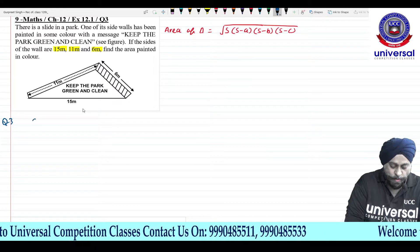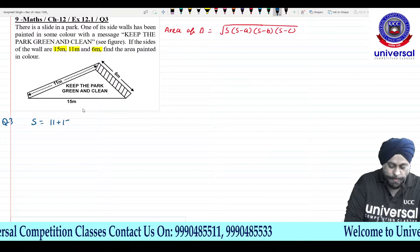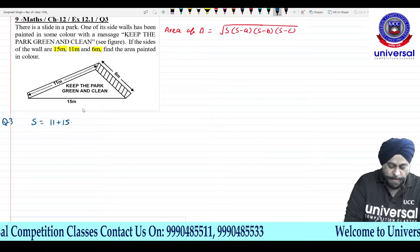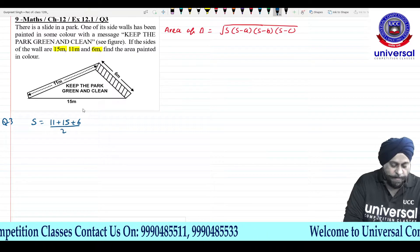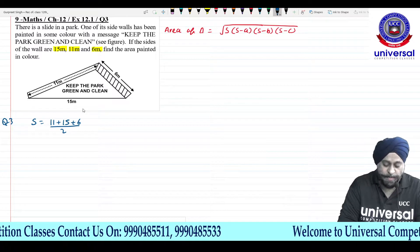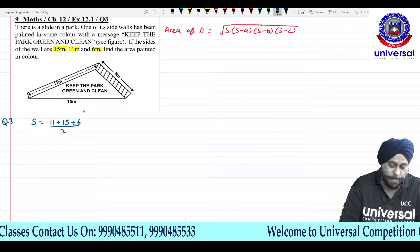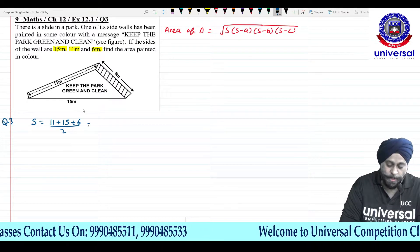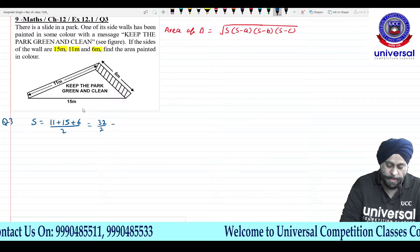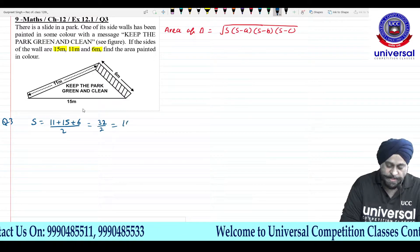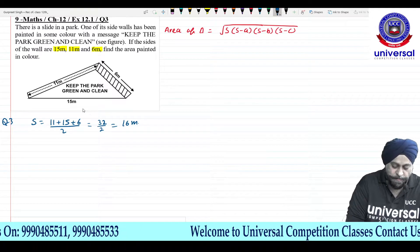S is equal to (11 + 15 + 6) divided by 2. 11 plus 15 comes out to be 26, and 26 plus 6 is 32. So S = 32 divided by 2, which comes out to be 16 meters.